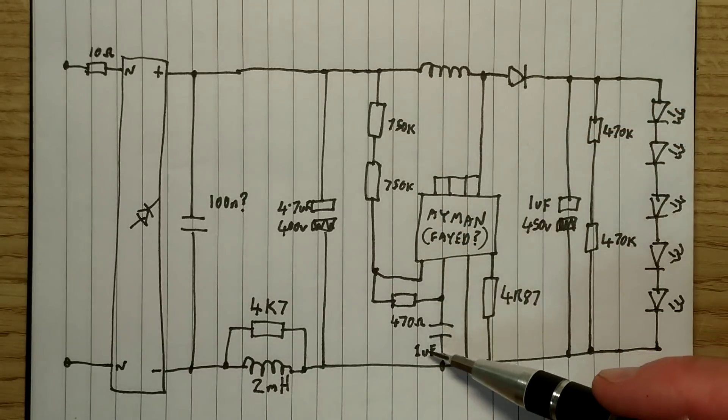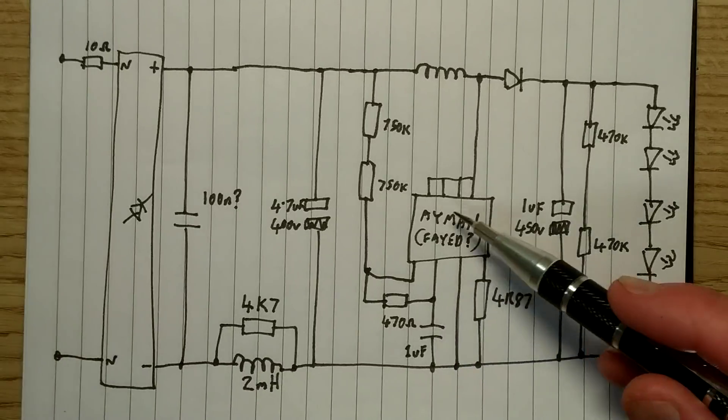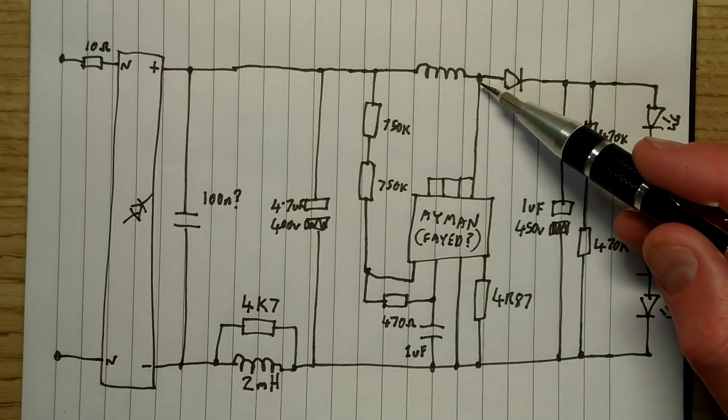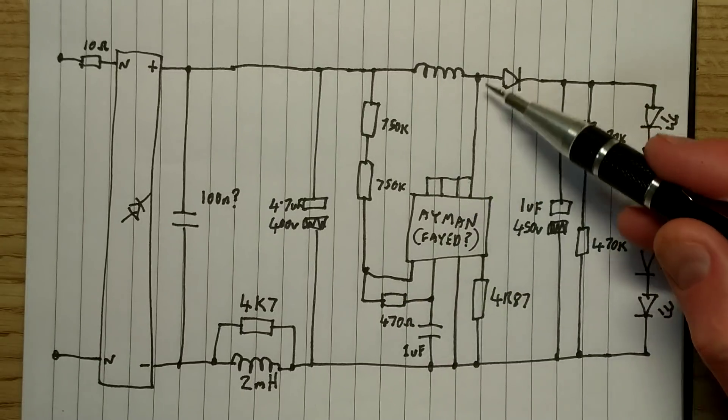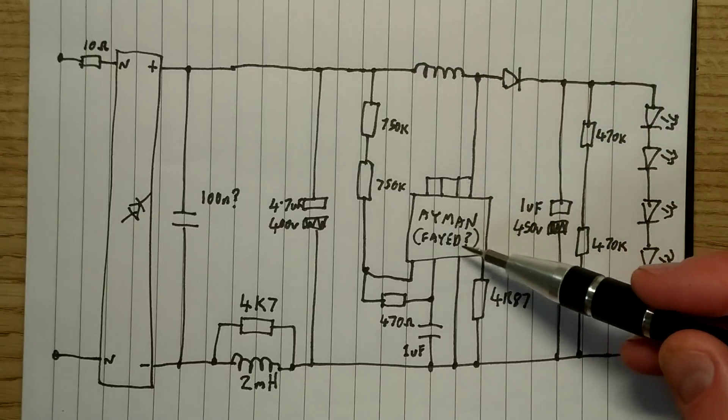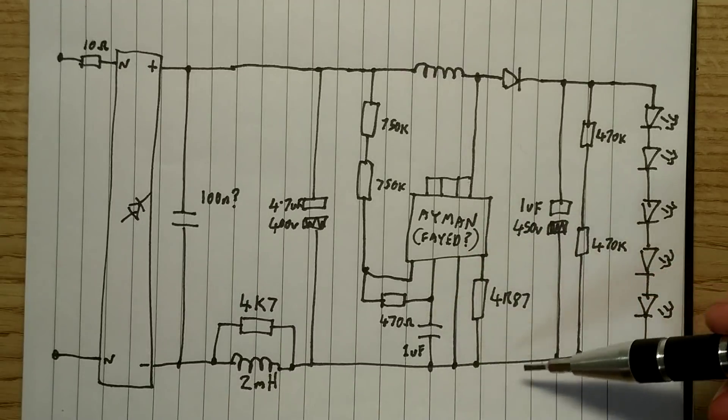And they'll initially trickle charge that capacitor. It's low value, one microfarad. But then either the chip will run off that supply, or it will be actually taking a little zap from the turning off of the inductor, and it will be deriving its supply internally with some clever circuitry just to keep that capacitor charged up.